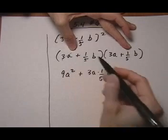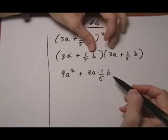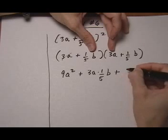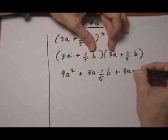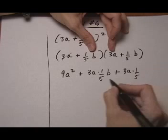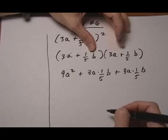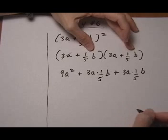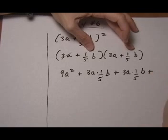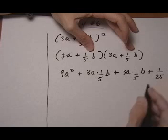So we're done with 3a. Now we go to 1 fifth b times 3a. And because they're being multiplied I can put it in either order. So I'm going to put it in the same order as the one right before it. 3a times 1 fifth b and then 1 fifth b times 1 fifth b. And that's going to give me 1 over 25 b squared.